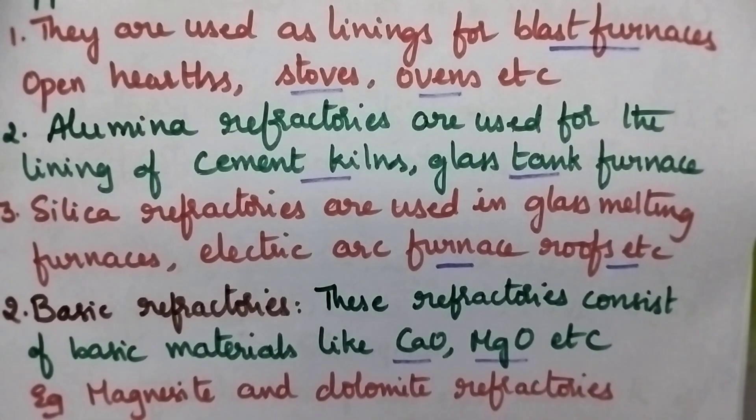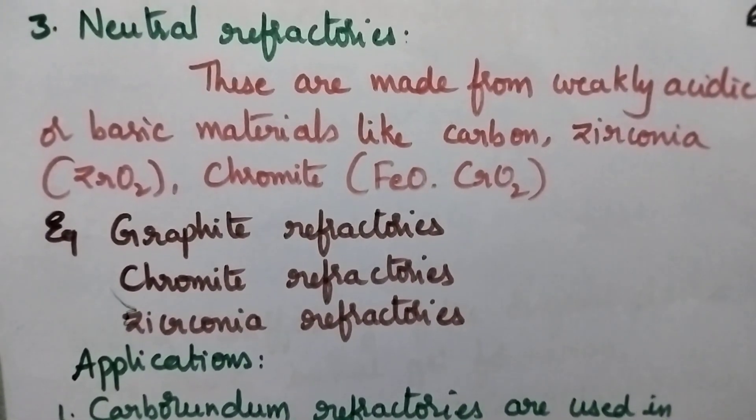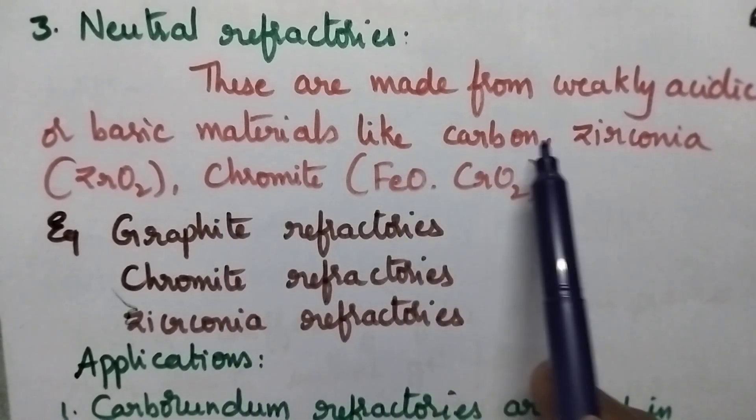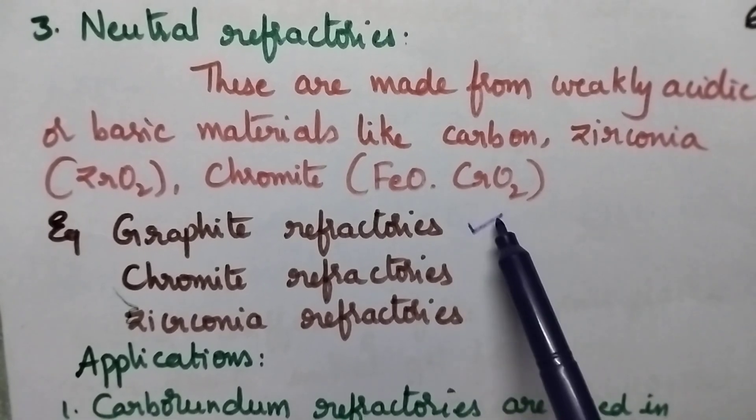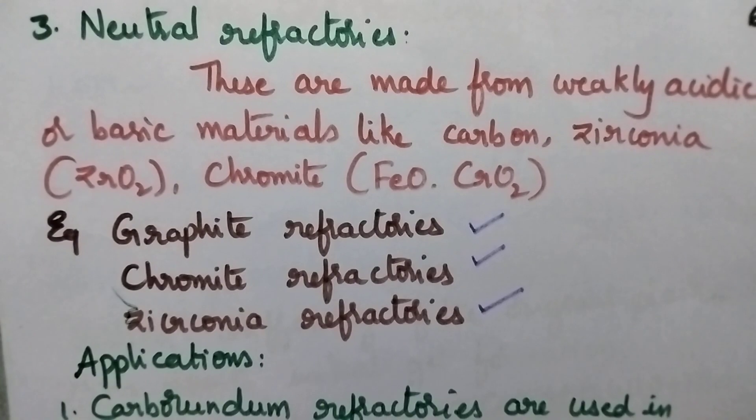The third category includes neutral refractories. They are made from weakly acidic or basic materials like carbon, silicon, zirconia, or chromite. Good examples include graphite refractories, chromite refractories, and zirconia refractories.